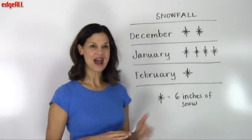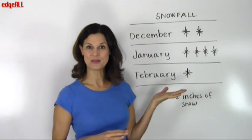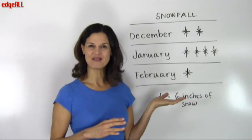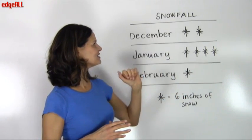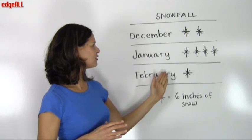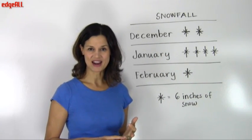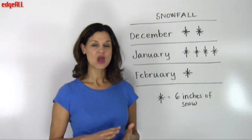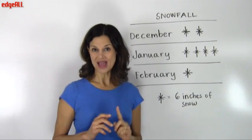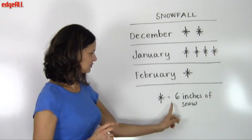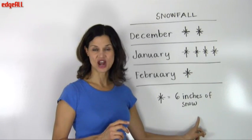So I've drawn this example on the board behind me of a pictograph of the amount of snowfall over the three winter months of December, January, and February. We are going to use one snowflake to represent six inches of snow.